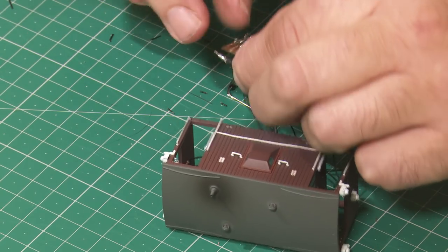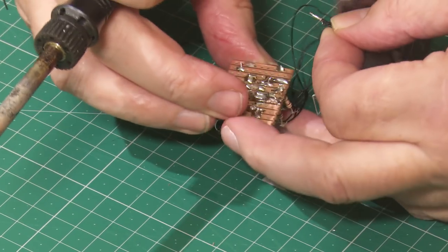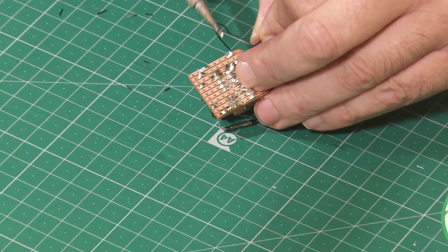That just leaves the six negative cables and they are twisted together and soldered as just one lump onto the circuit board.